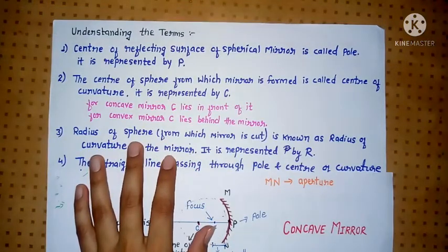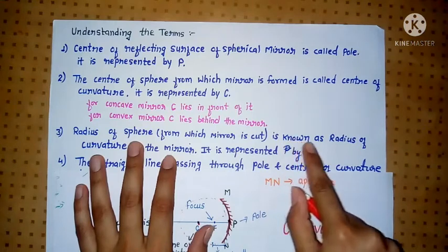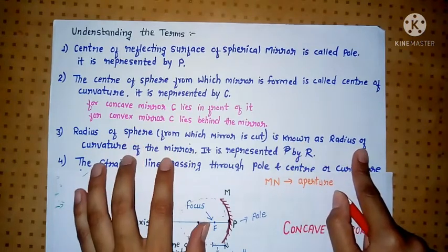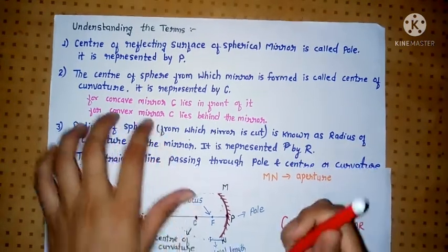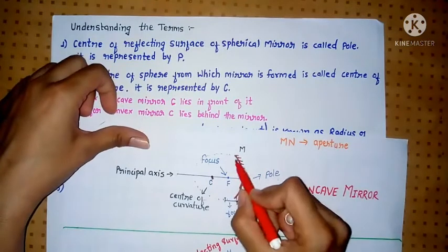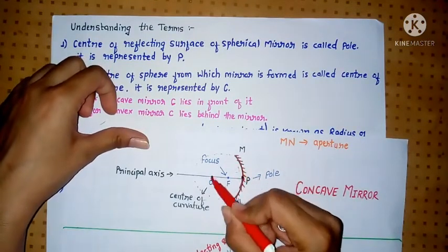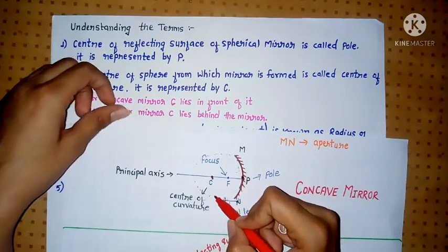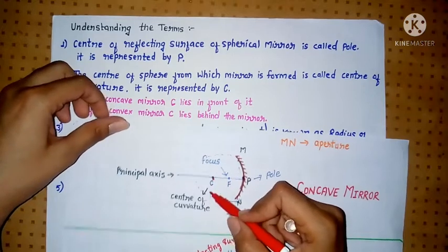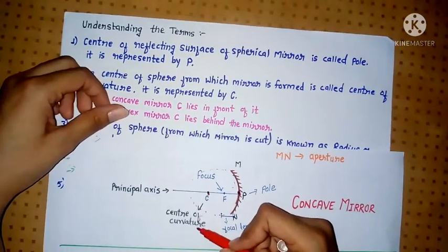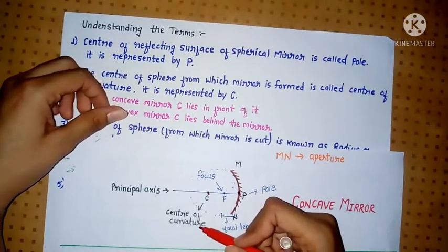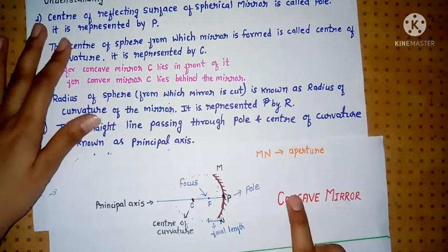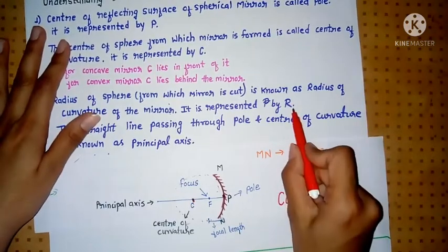The radius of the sphere from which the mirror is cut is known as the Radius of Curvature of the mirror. It is represented by capital R.